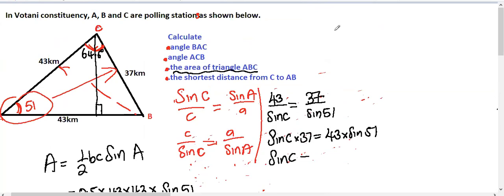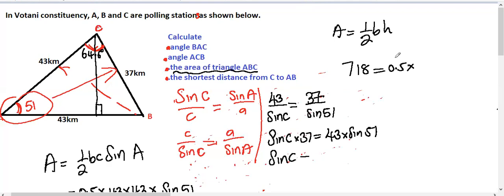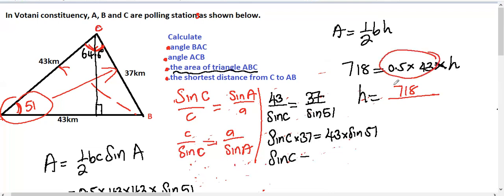We use the area formula: Area = ½ × base × height. We already found the area is 718, so: 718 = 0.5 × 43 × h. We need to solve for height, which is the shortest distance. Rearranging: h = 718 / (0.5 × 43).